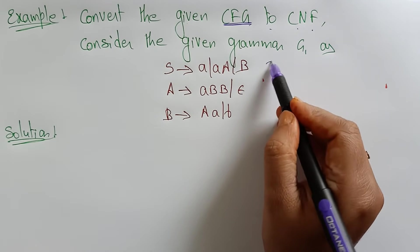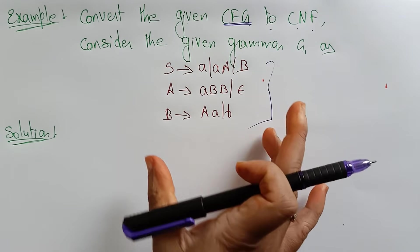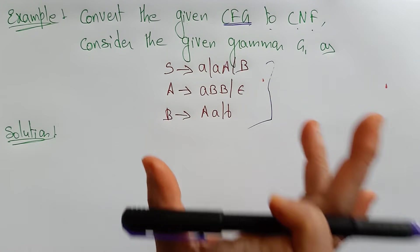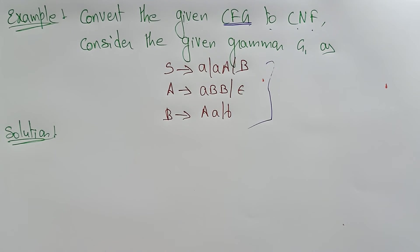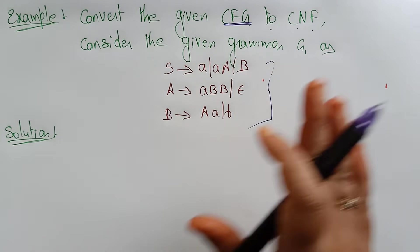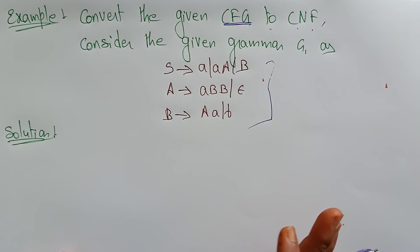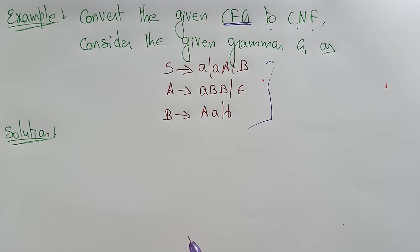This is the grammar they have given. We have to convert this context-free grammar to CNF. First of all, let's see whether this grammar is already in CNF or not. Let's observe that grammar and check whether it is in CNF or not.